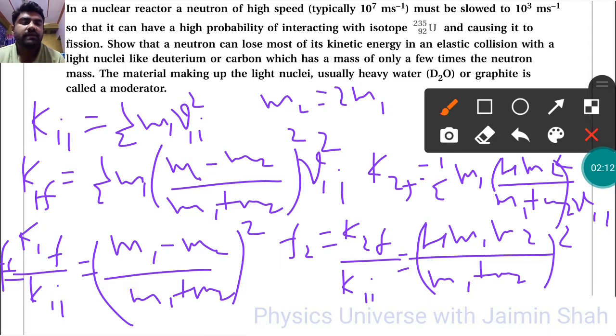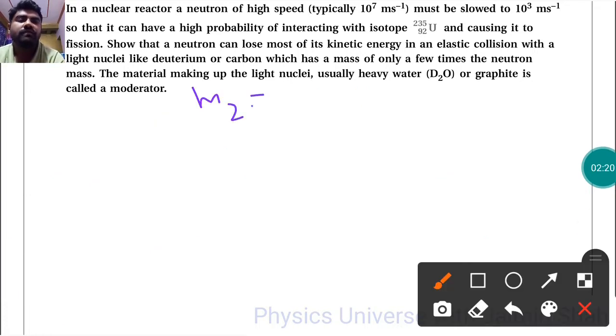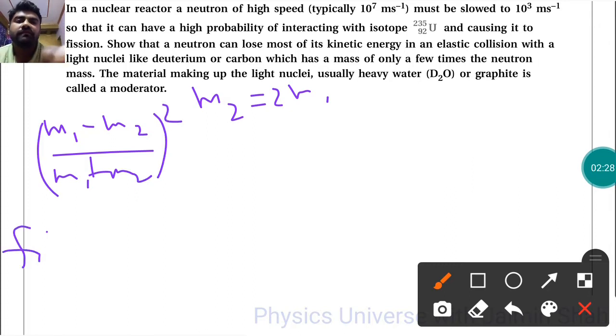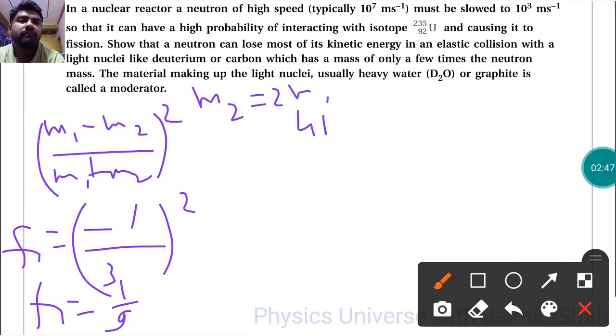Now if m₂ = 2m₁, then f₁ = [(m₁ - 2m₁)/(m₁ + 2m₁)]² = (m₁/3m₁)². The m₁ cancels out, so f₁ = 1/9.